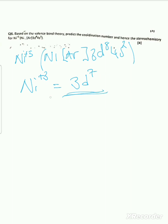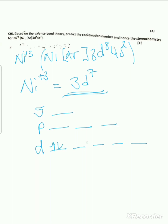To find the coordination number, I'll write the orbitals starting from s, then p, then d. The s orbital accommodates two electrons, p accommodates six electrons, and d accommodates ten electrons — two electrons per box. Since we have no electrons in 4s, we only have seven electrons, so we start placing them in the d orbital boxes: two, two, two, and one in the last box.